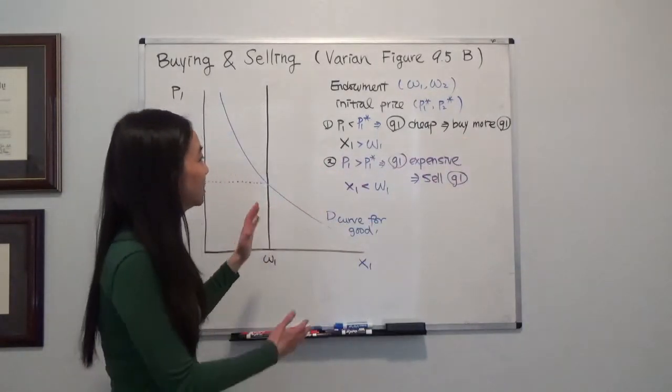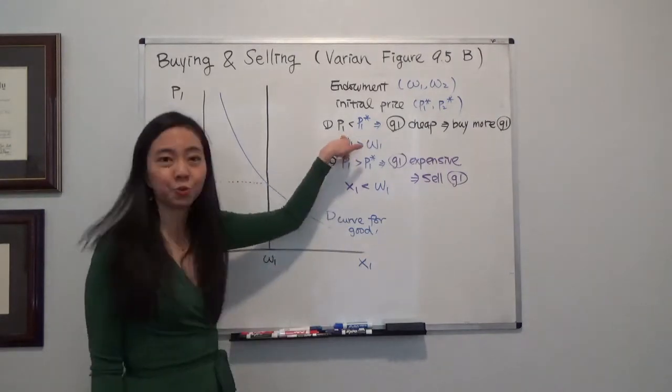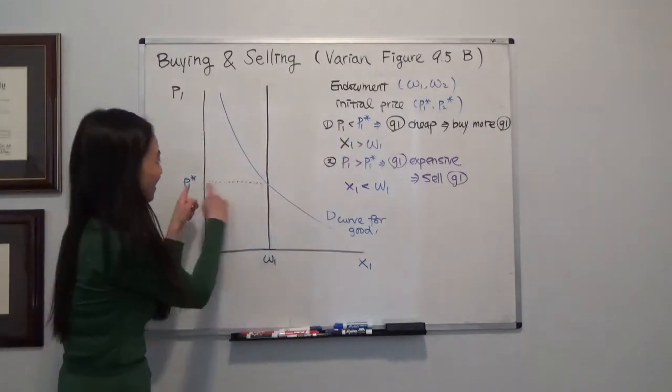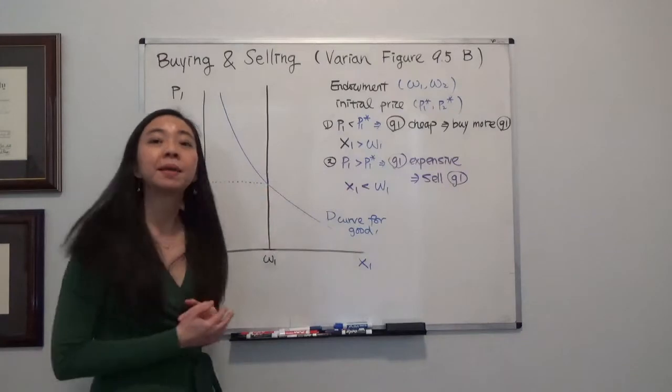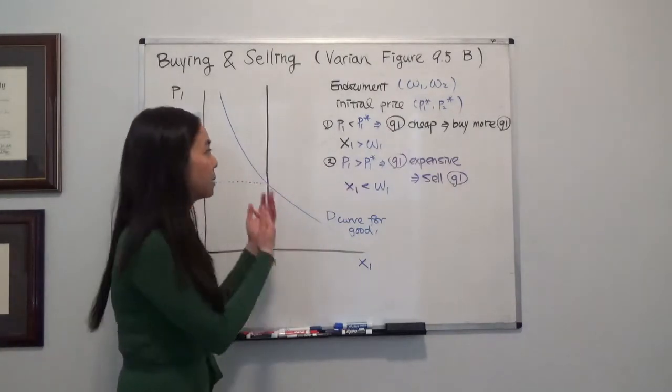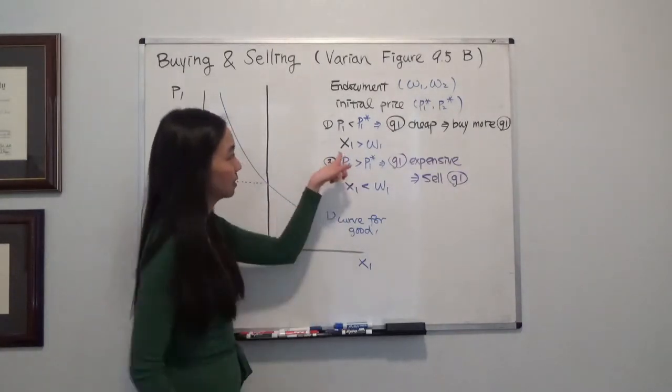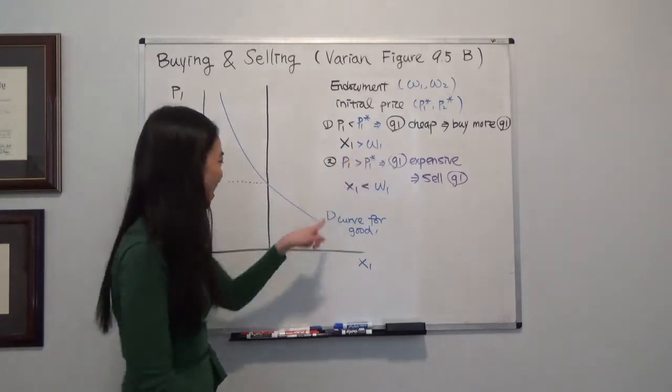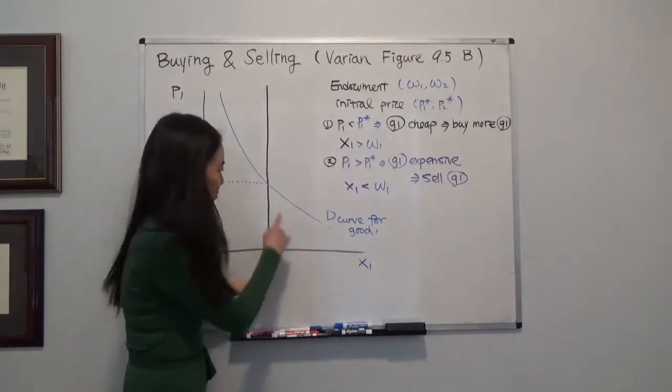So you can see that if the price of good 1 goes down, so if the price is lower than P1 star, it makes sense for me to buy more good 1 and my final consumption, X1, is going to be higher than my initial bundle. So we're here.